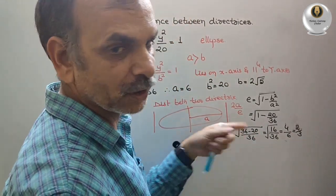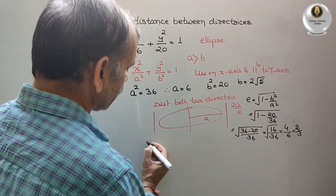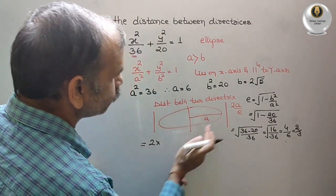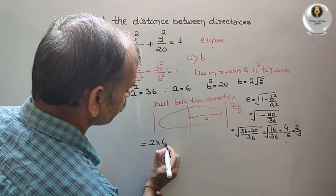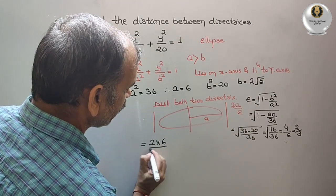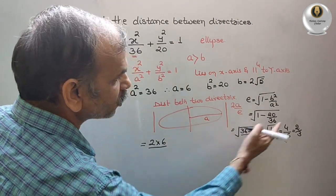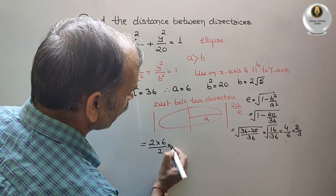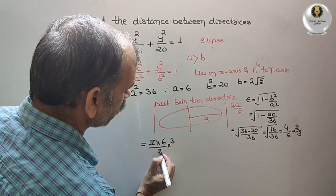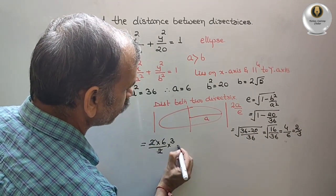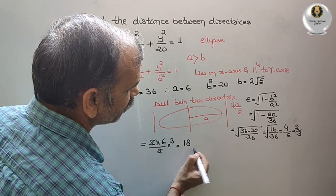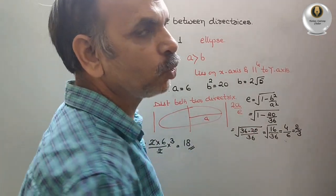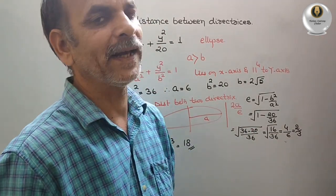Now substitute the values to get our answer. Distance = 2 × a / e = 2 × 6 / (2/3). The 2s cancel, giving 3 × 6 = 18. So 18 is the distance between the two directrices.